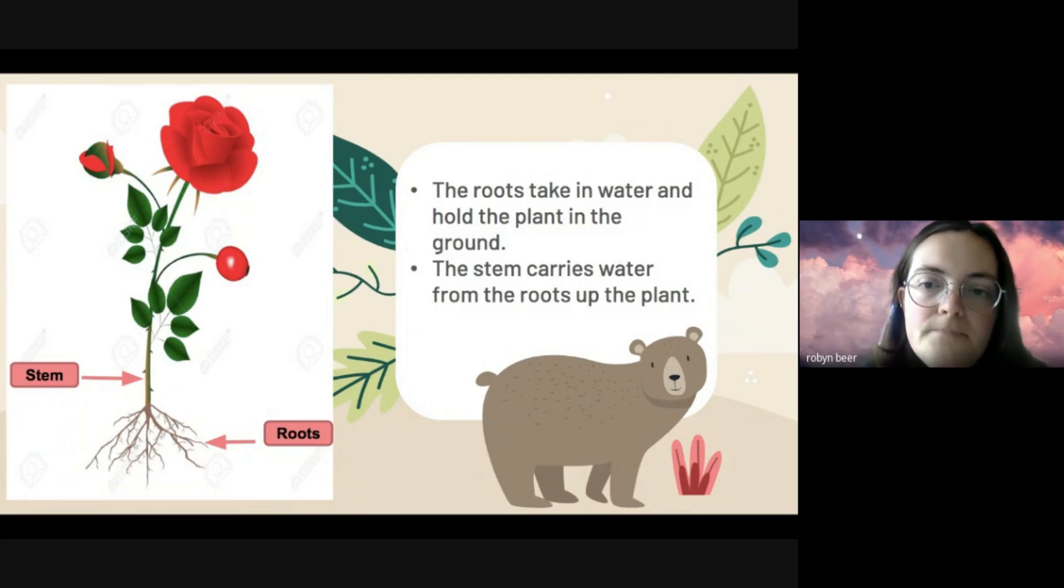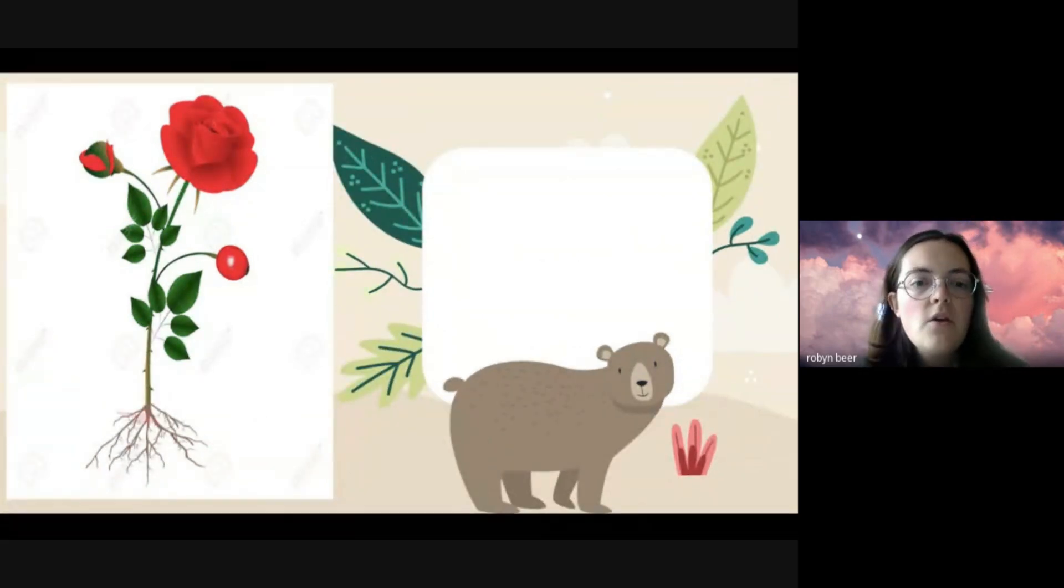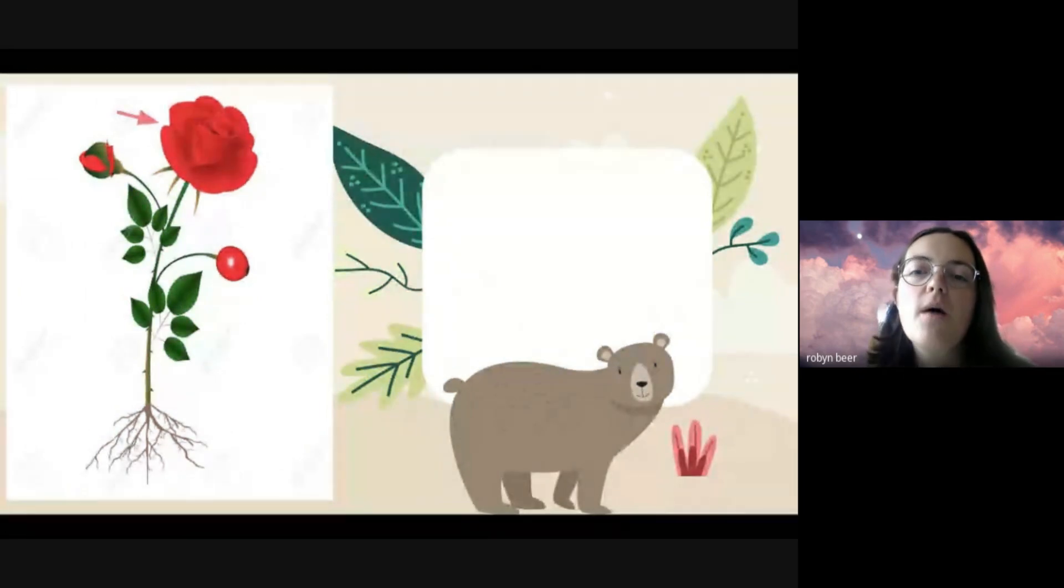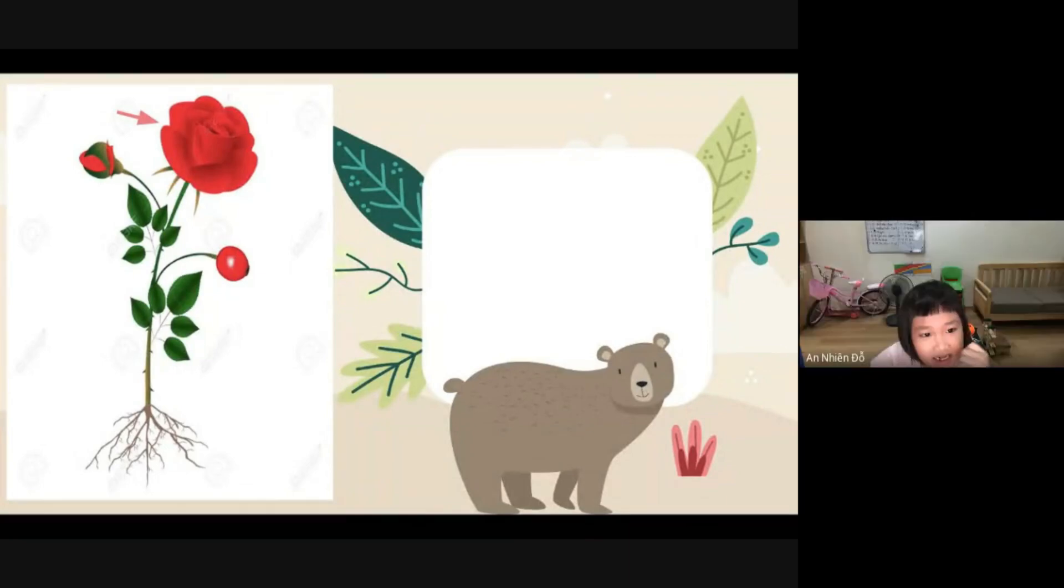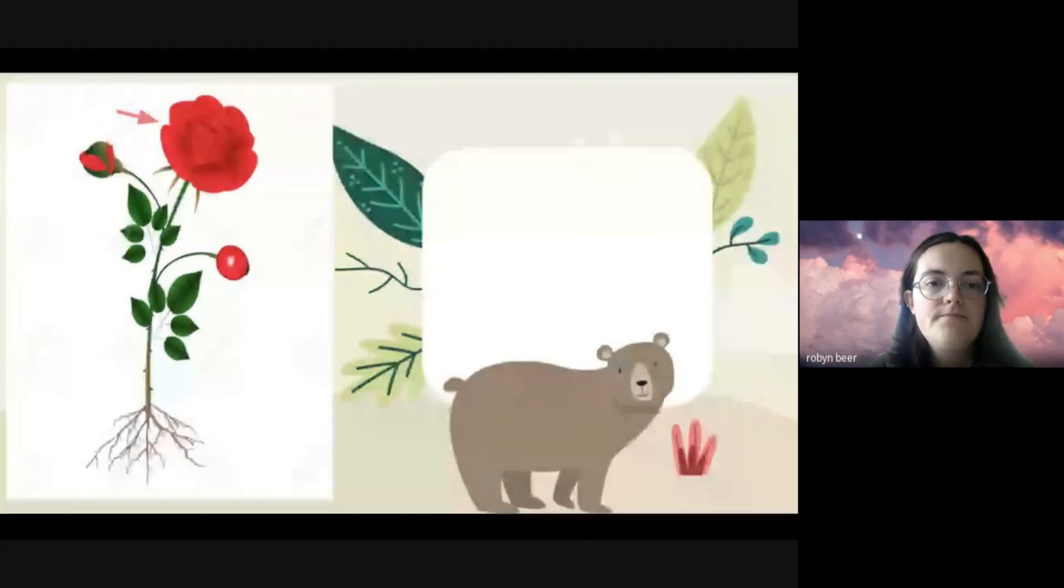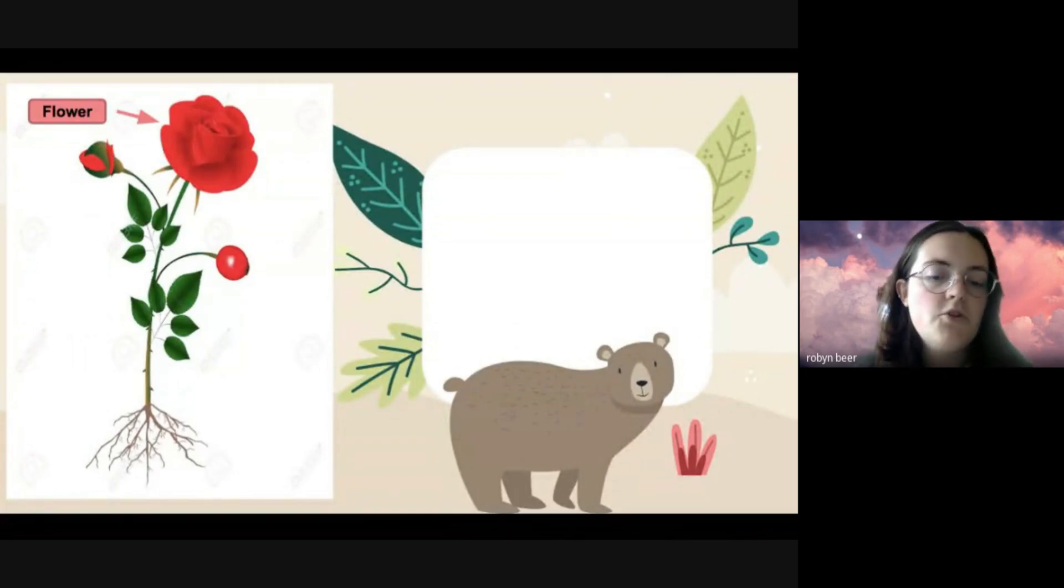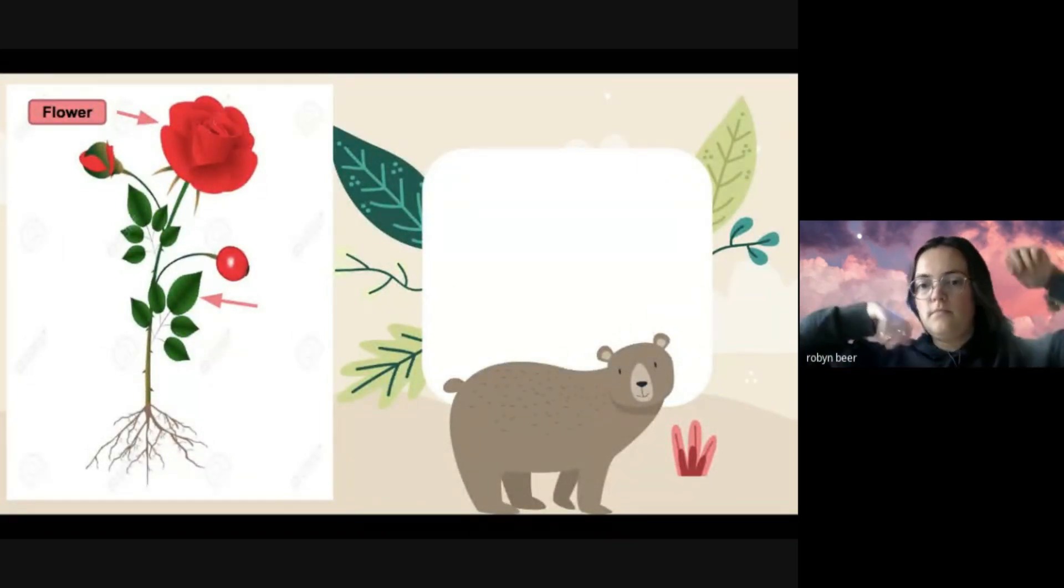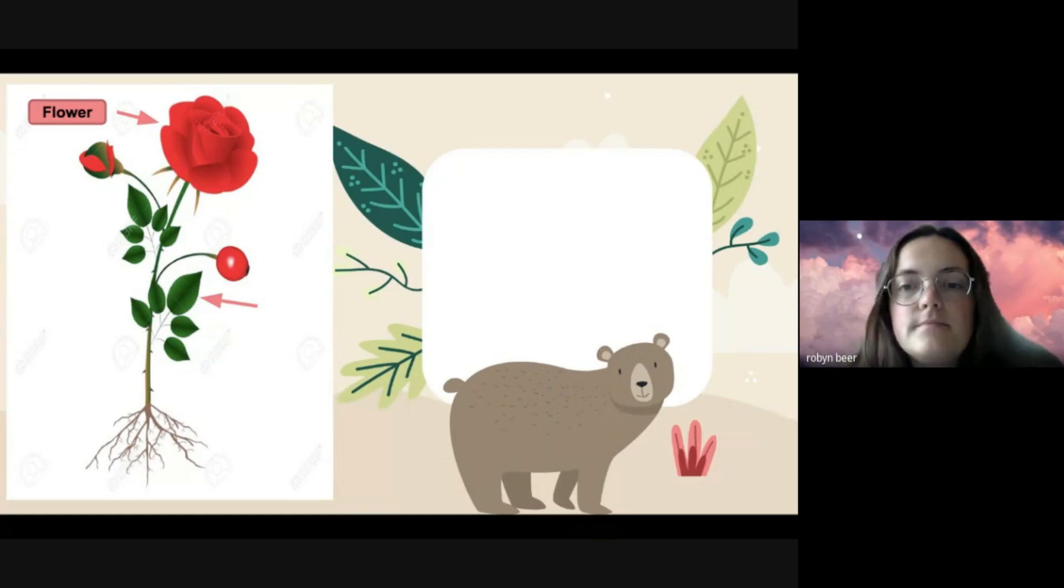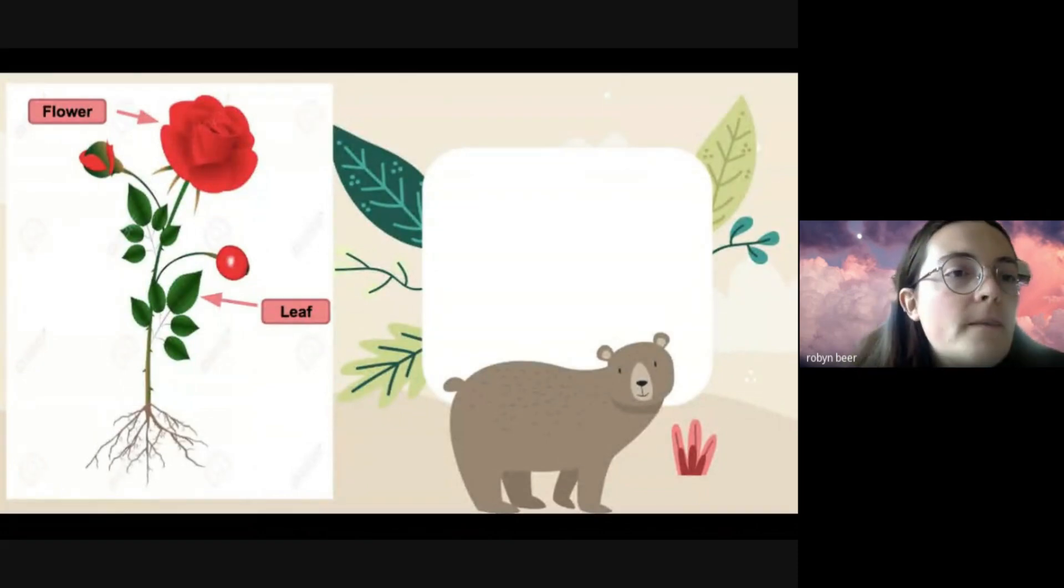Next, who can tell us what this part is at the top? What is this part, Elsa? Yes, do you know what this is? It is a flower. It's the flower, very good. The flower, and this is a beautiful red flower. Okay, you can tell us what these are, these green things? Leaves. Good TNN, remember to raise your hand next time, but well done. These are the leaves.